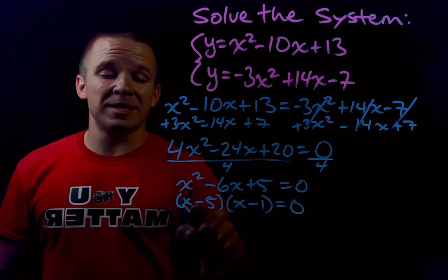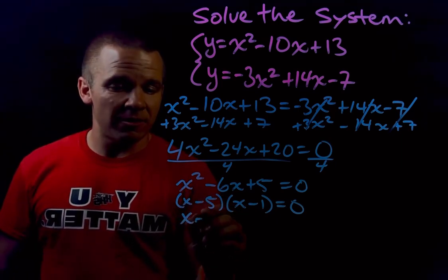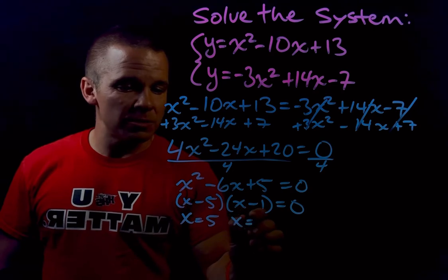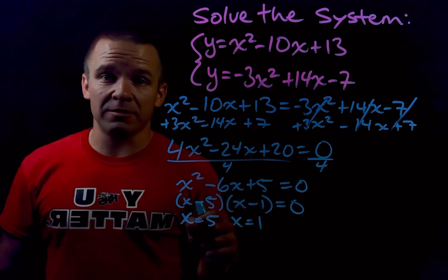Now I can solve for x by setting each factor equal to zero. So I get x equals 5 and x equals 1. Those are my two x values and I'm gonna use them to get my y values.